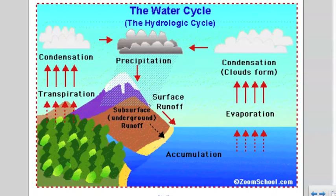Runoff water from the precipitation that is unable to infiltrate soil moves over land and into a water source. This accumulation area over here is all the runoff water that has built up to form lakes, streams, etc. And that is how the water cycle works.